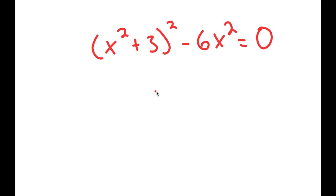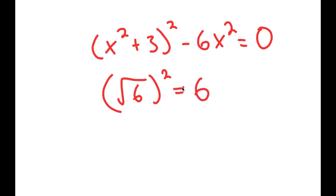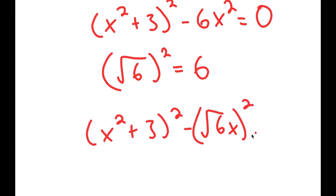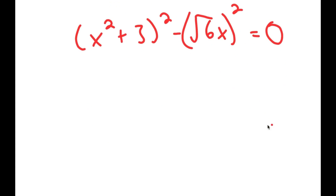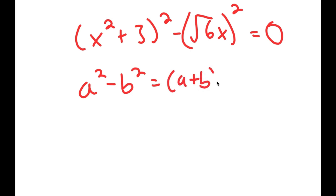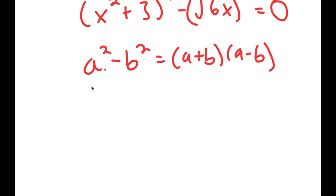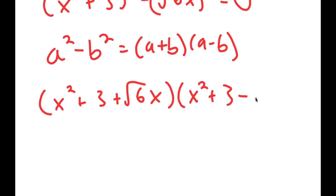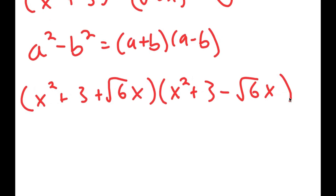Now remember how the square root of 6 squared is equal to 6. So what I'm going to do is rewrite this as x squared plus 3 squared minus the square root of 6 times x, all squared, equal to 0. The reason I did that is because now I can use the property a squared minus b squared is equal to a plus b times a minus b. So this turns into x squared plus 3 plus the square root of 6 times x, multiplied by x squared plus 3 minus the square root of 6 times x, is equal to 0.